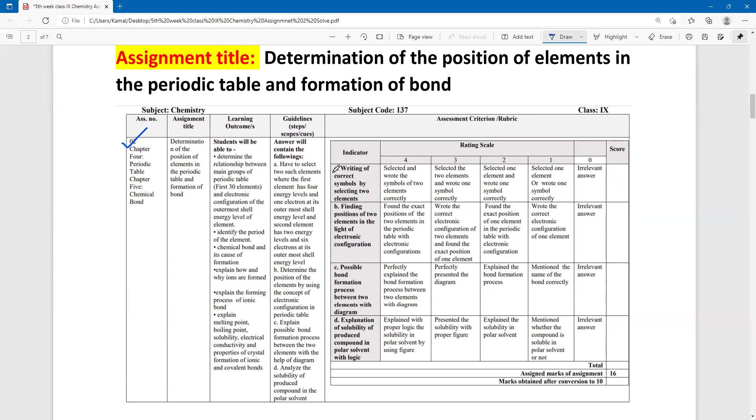So dear students, there are total four questions including total mark 16. The first question, the information is given here. Determine the relationship between main group of the periodic table, the first 30 elements, the electronic configurations of the outermost cell energy level of the electron.